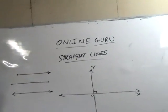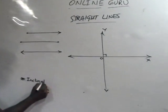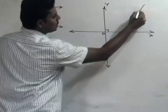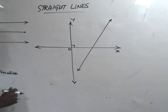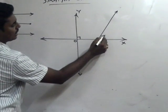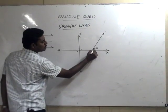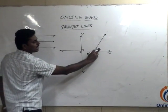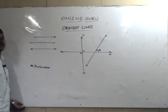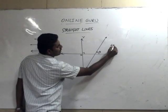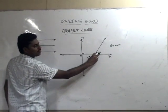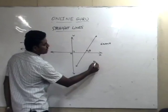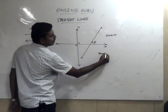Now we learn about the definition of the inclination of a straight line. A non-vertical line makes an angle theta with the x-axis in the positive (anticlockwise) direction, where 0 ≤ theta < pi. This theta is called the inclination of the line, and the tangent of the inclination is called the slope of that line, denoted by m.